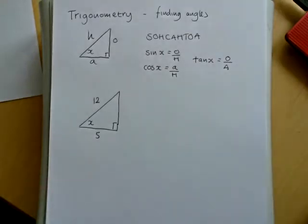In this video I'm going to show you how to use trigonometry to find missing angles in right-angled triangles. So the first thing to remember is the triangle we're given is right-angled, and we're going to look at finding angles.